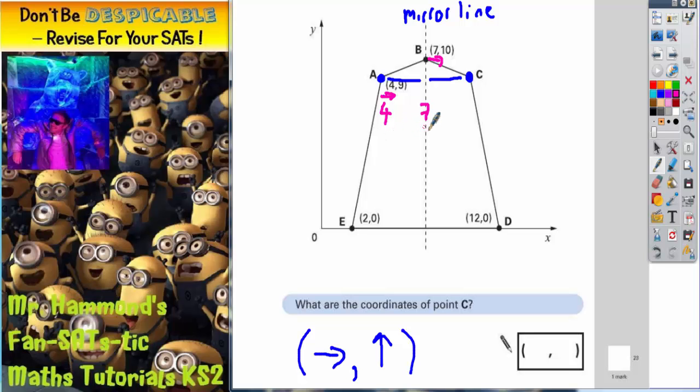So I then need to do the same gap of 3 on the other side. So I'm going 4 plus 3 is 7, then plus another 3 would be 10. And that would take me level with point C. So point C must be 10 across.